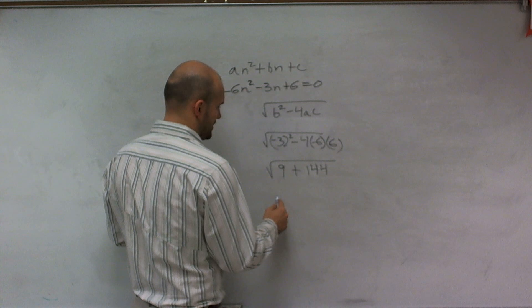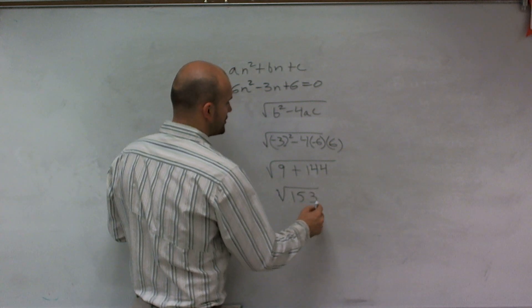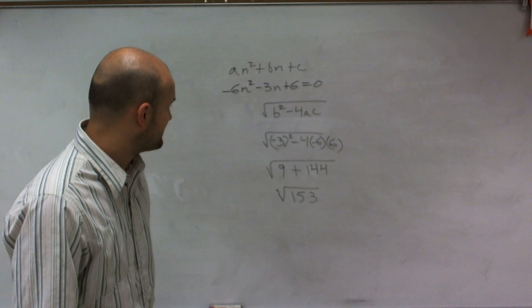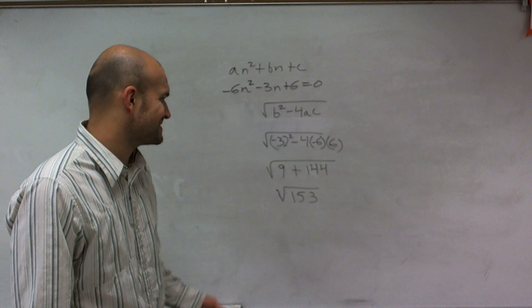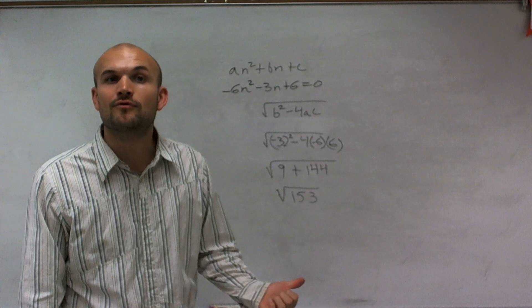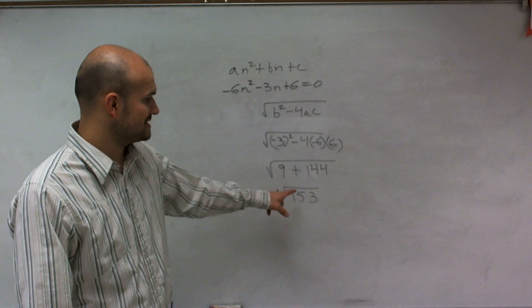So then I take the square root of 153, and I look at that and say, is that a square number? It's close to being a square number, but it's not actually a square number. The closest two square numbers are 144 (12²) and 169 (13²). So this is not a square number.